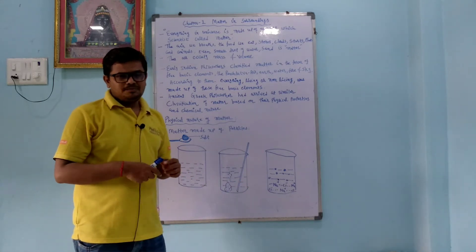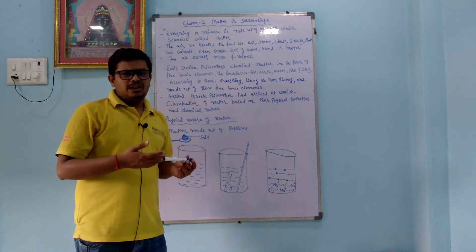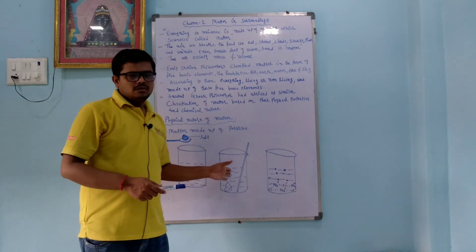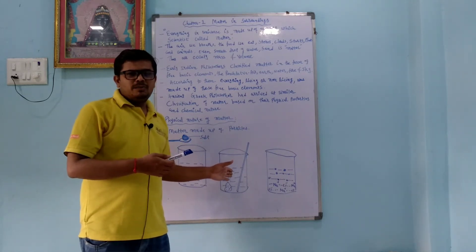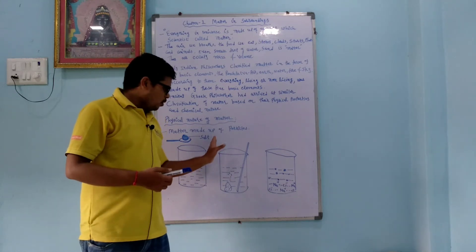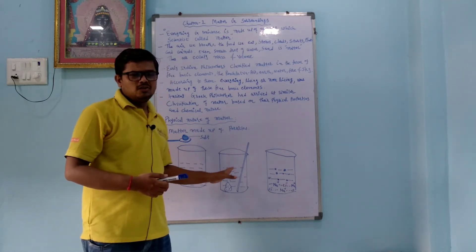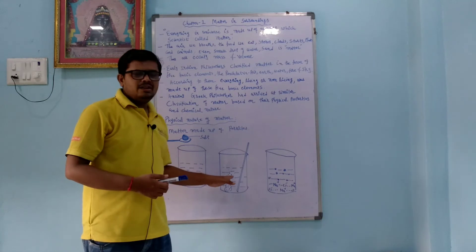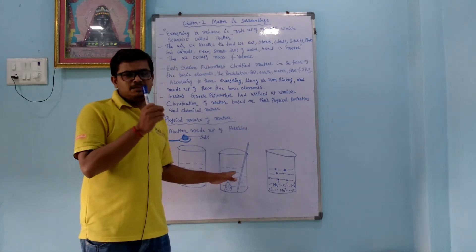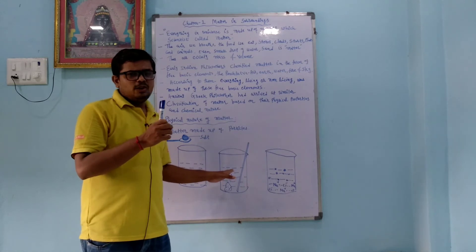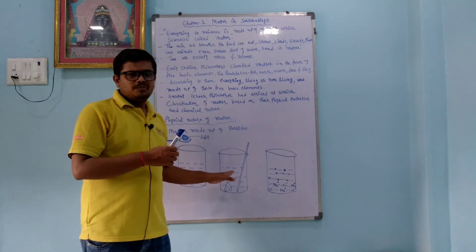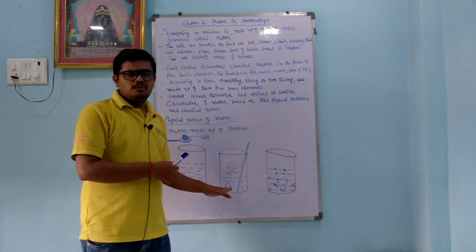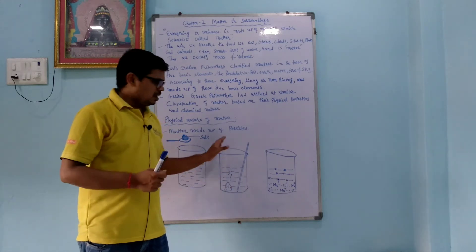If we add oil to water, oil is never miscible in water because oil is made up of covalent compounds, which are non-polar, whereas water is a polar compound with H⁺ and OH⁻ charges. Because of this polarity difference, oil does not dissolve in water. However, if you add oil to kerosene or petrol, they are miscible because both are covalent compounds.